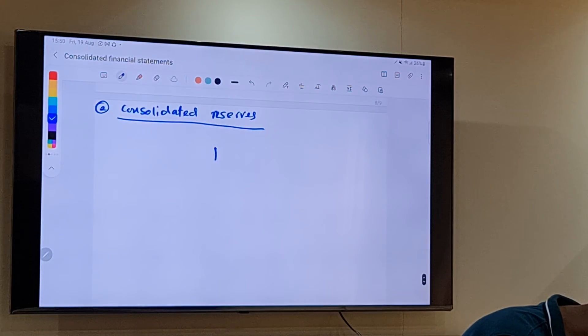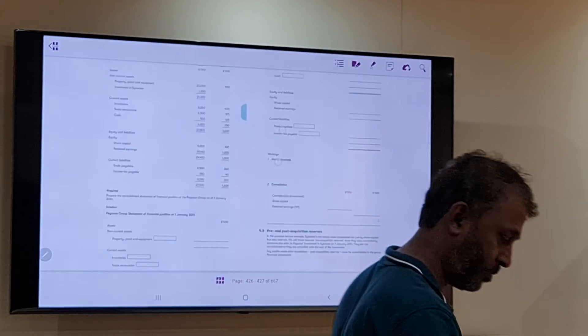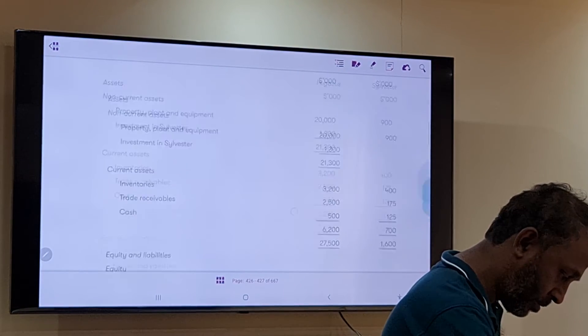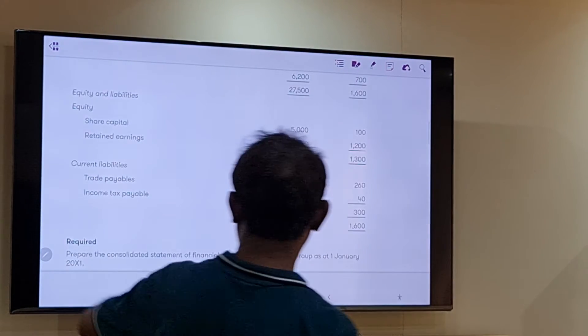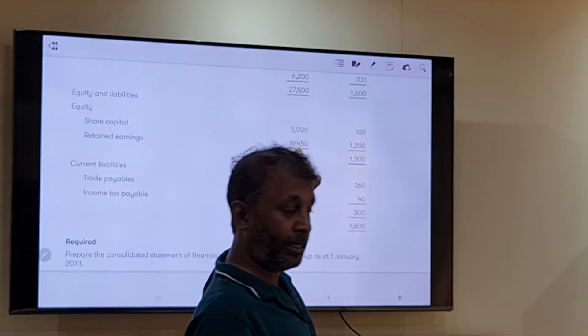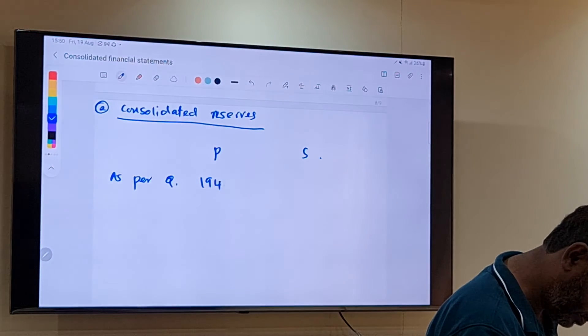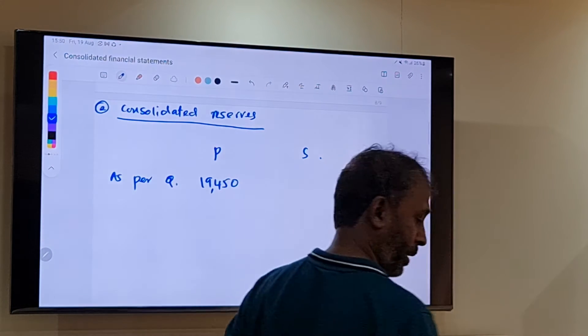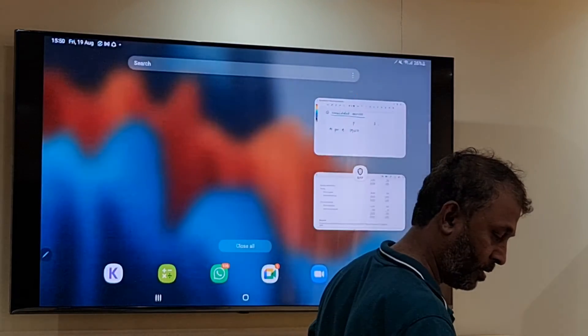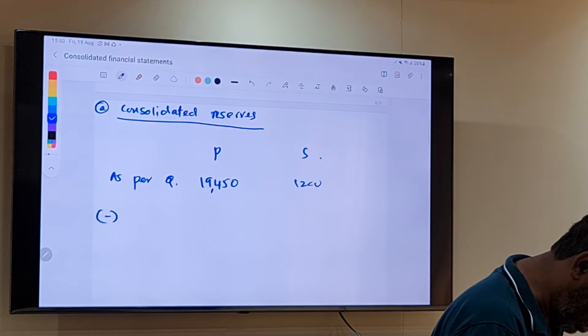Working number two: consolidated retained earnings. The retained earnings of the parent and the retained earnings of the subsidiary, how we manage this? We have parent company and subsidiary company. Can we find out from the question? Parent company retained earnings, how much? 19,400. Subsidiary company retained earnings, how much? 1,200.